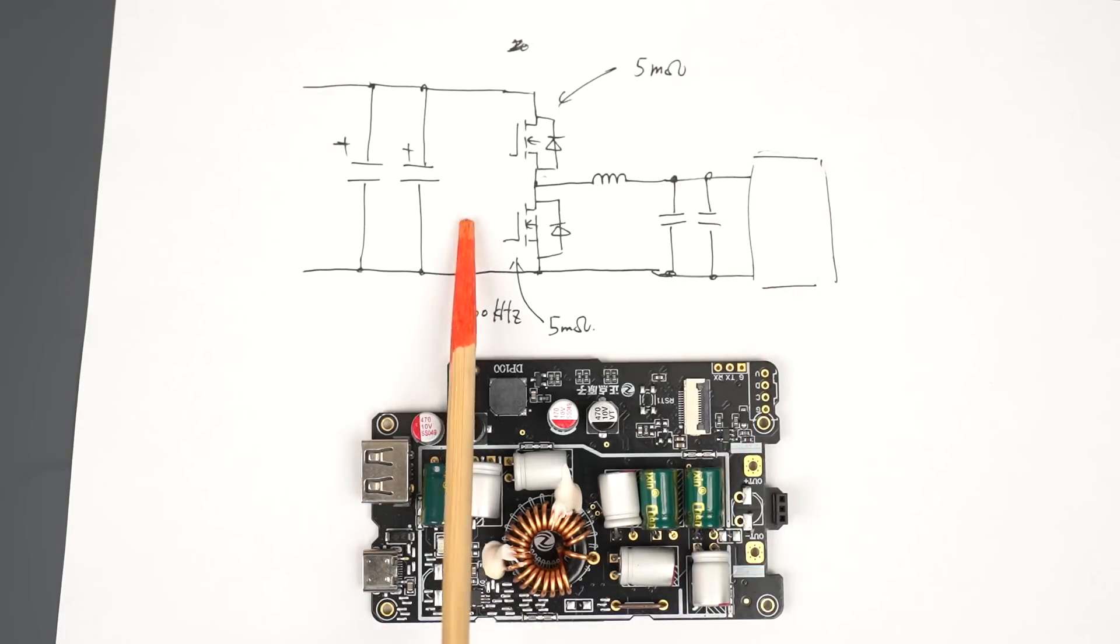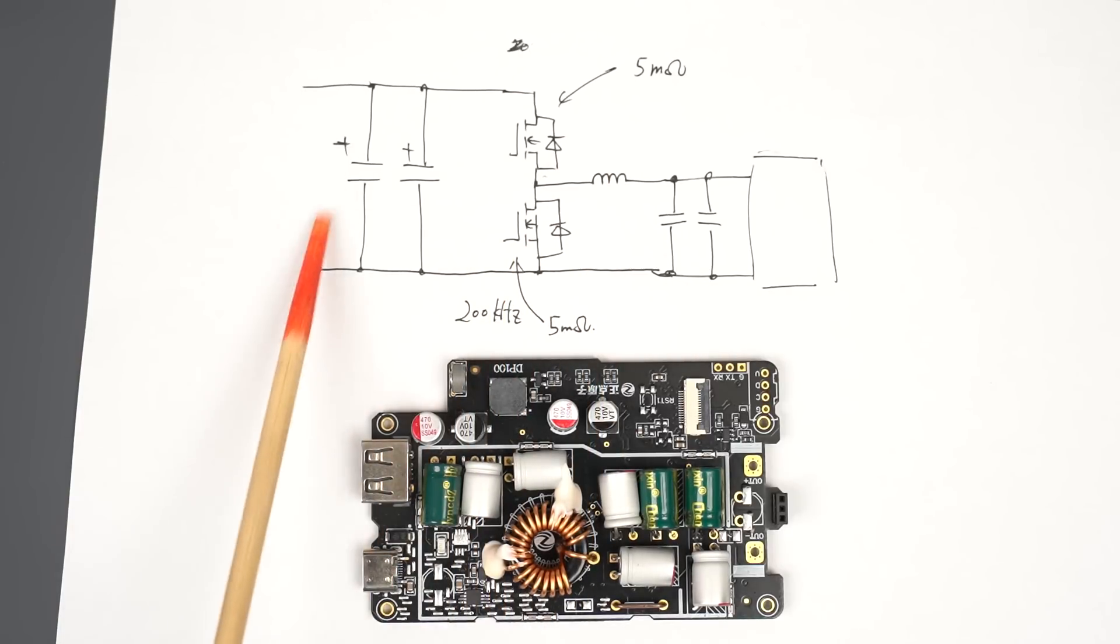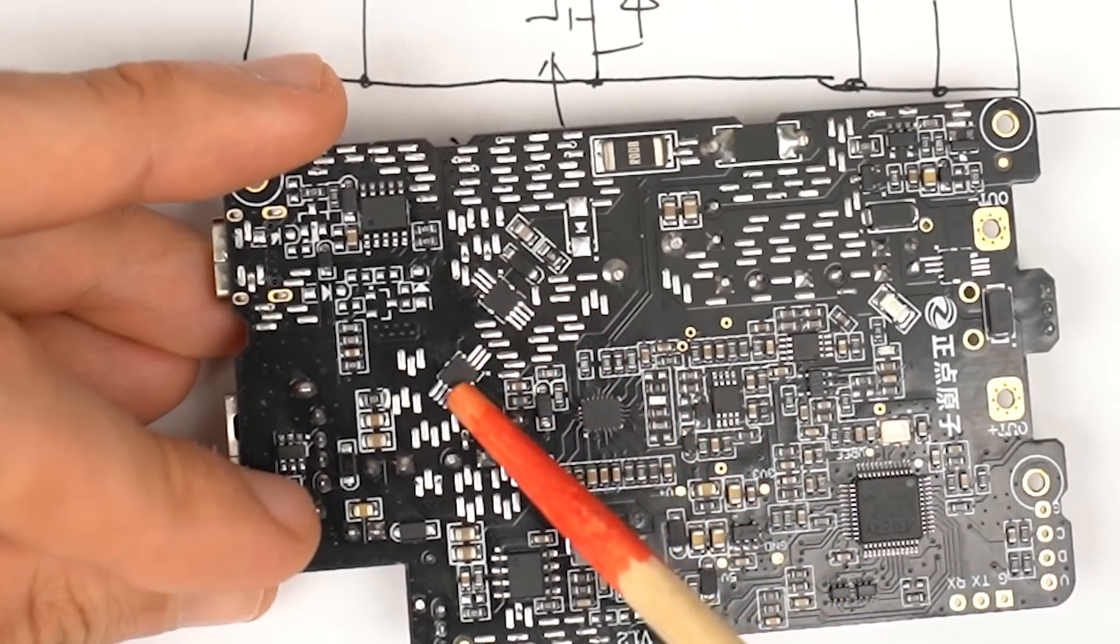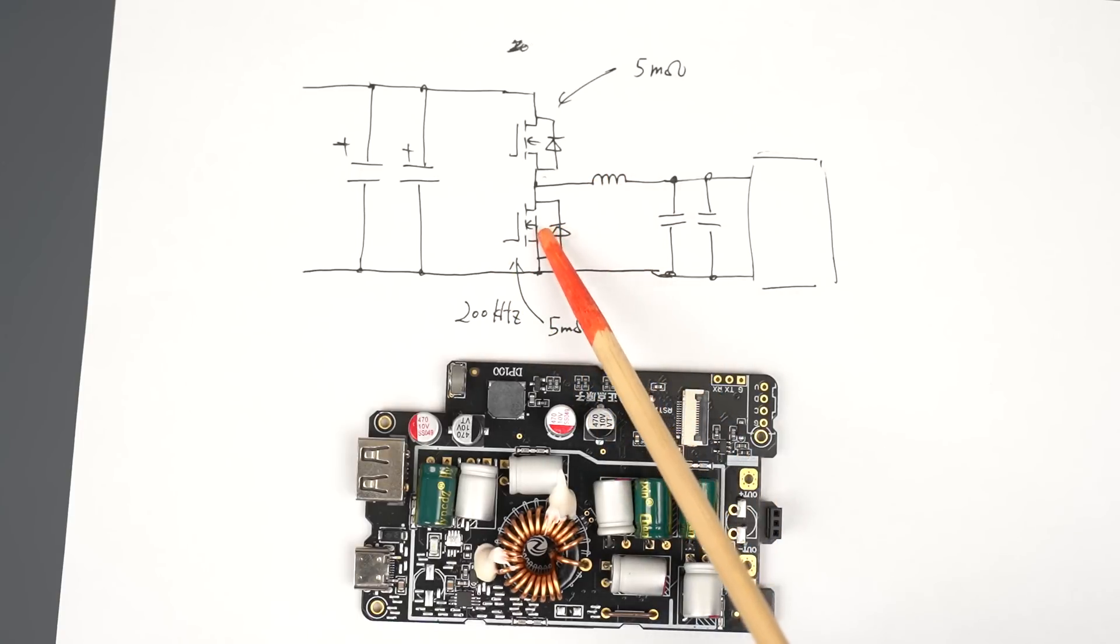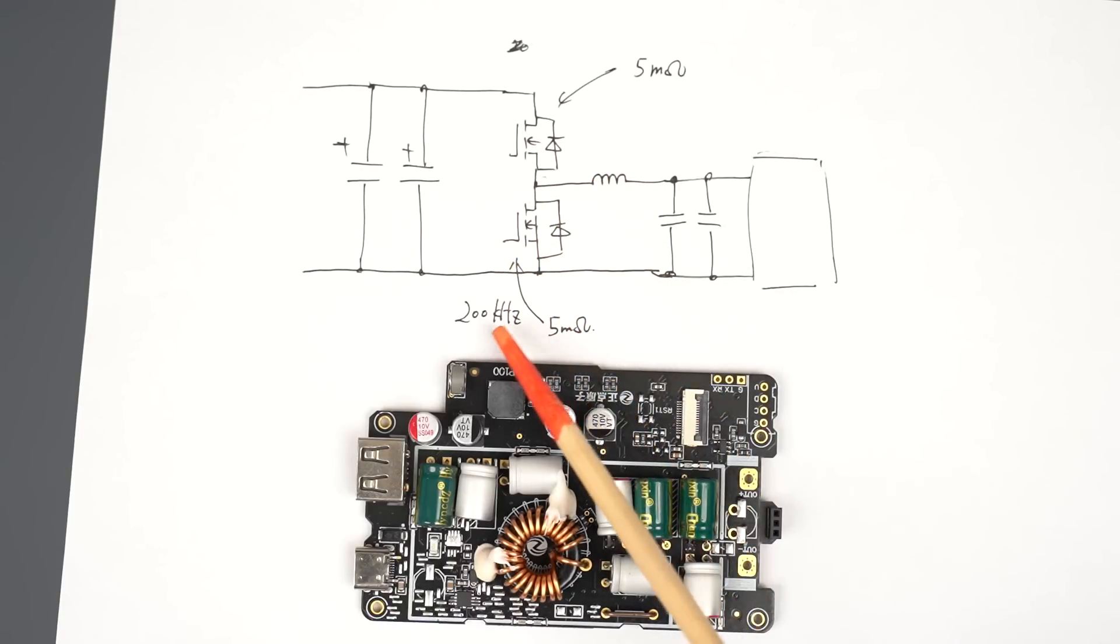I drew an approximate circuit diagram. This circuit is a common step-down converter circuit. This part is the voltage input, and this part is the output. There's also a MOSFET for cutting off the output, but I didn't draw it here. The inductor is here, and electrolytic capacitors are at the input. There are several more electrolytic capacitors at the output. These are MOSFETs. They are placed on the back side, here and here. High-quality MOSFETs are used. Their on-resistance is 5 milliohm. As we checked earlier, the switching frequency is approximately 200 kilohertz. Probably the switching frequency is fixed.